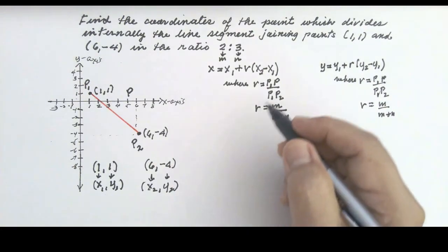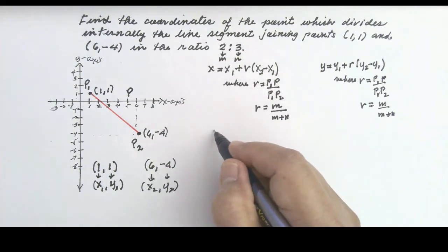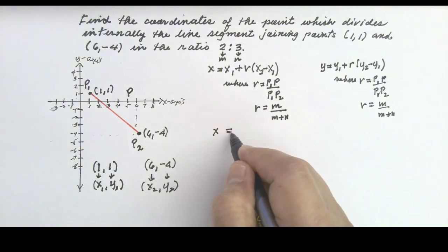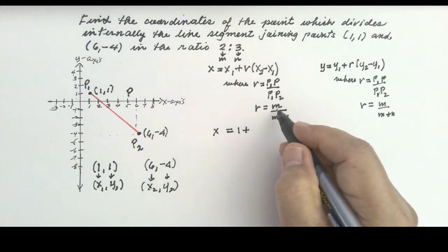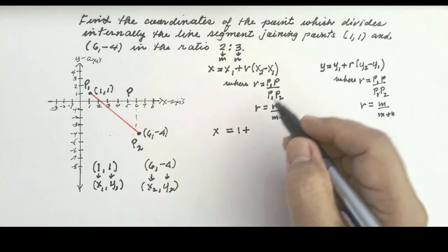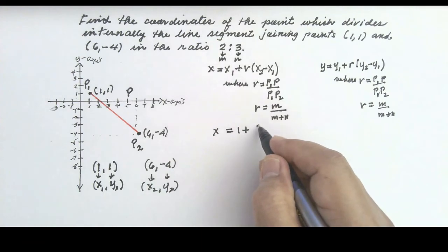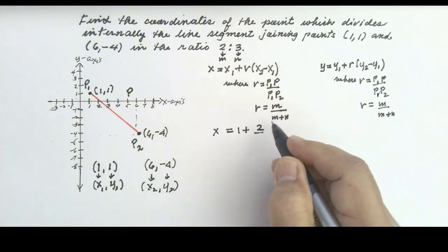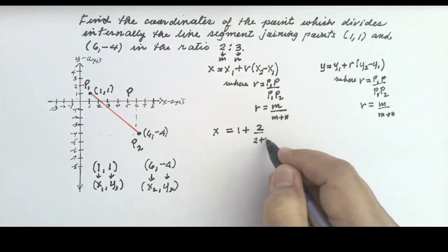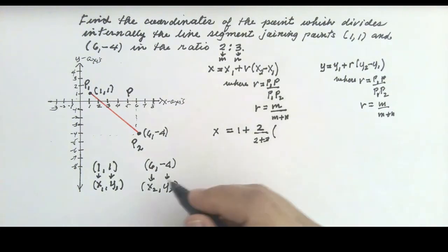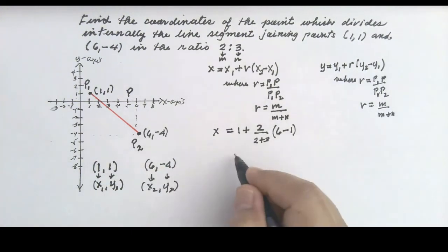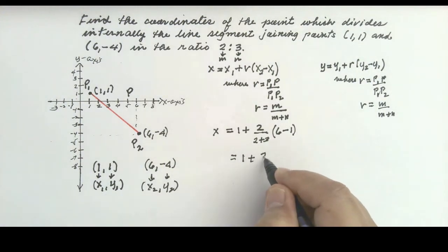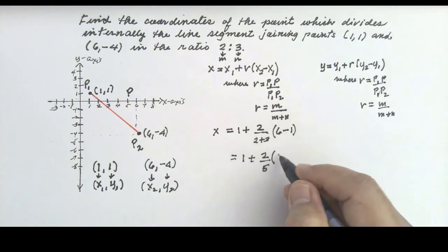So we will just substitute into the formula. x = x₁ + R(x₂ - x₁). Our x₁ is 1, R is M over M plus N which is 2 over (2 + 3), x₂ is 6, and x₁ is 1. So this equals 1 plus (2 over 5) times (6 minus 1).